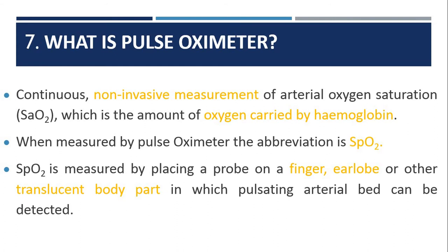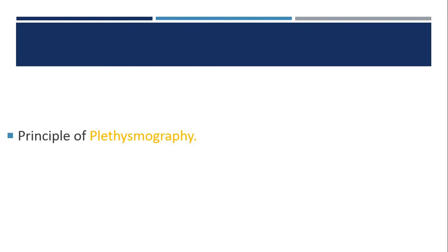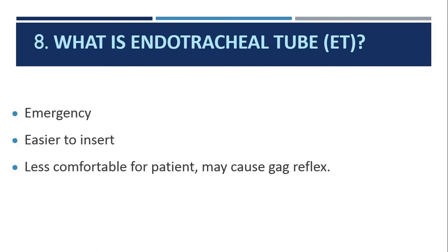The seventh question: what is a pulse oximeter? Nowadays found in almost every home, a pulse oximeter provides continuous, non-invasive measurement of arterial oxygen saturation (SaO2) — the amount of oxygen carried by hemoglobin. When measured by the pulse oximeter device, the abbreviation used is SpO2. It is measured by placing the probe on the finger, earlobe, or other translucent body parts where a pulsating arterial bed can be detected. Continuous monitoring of oxygen saturation is standard in the ICU, and it works on the principle of plethysmography.